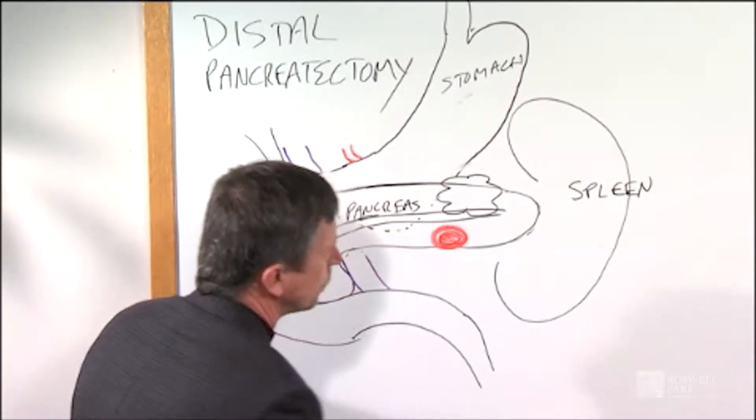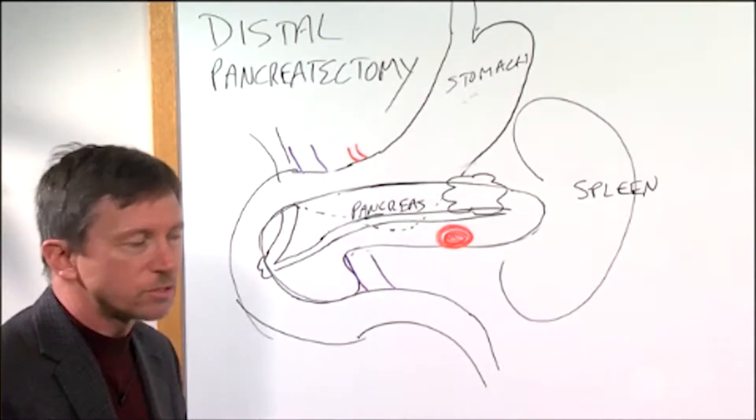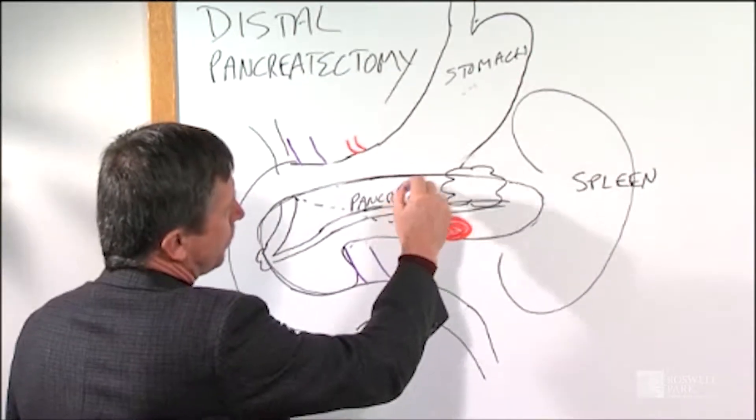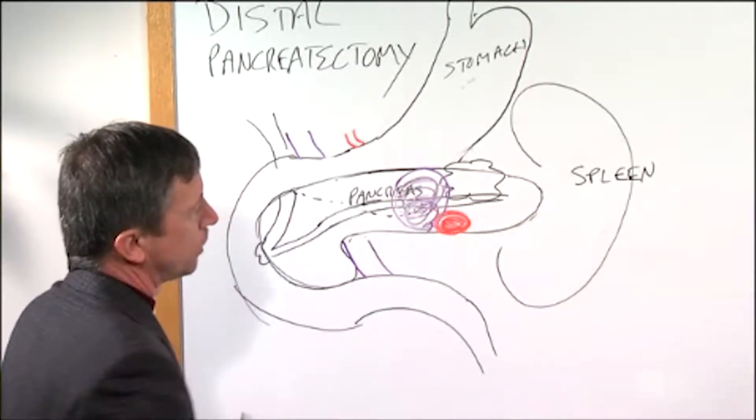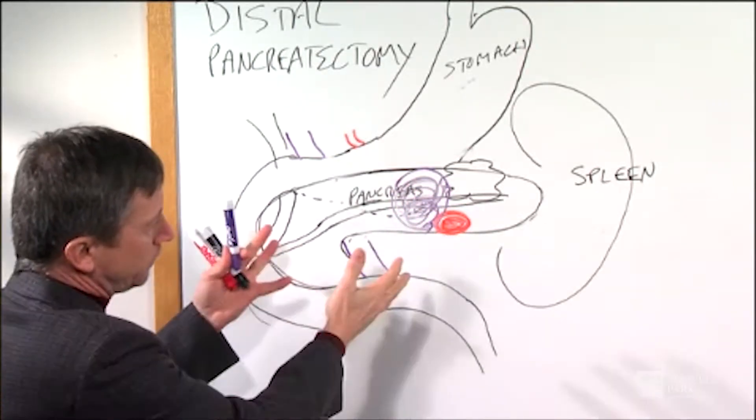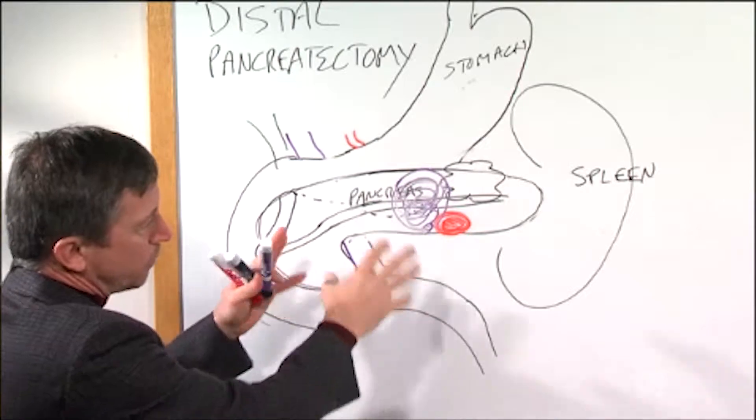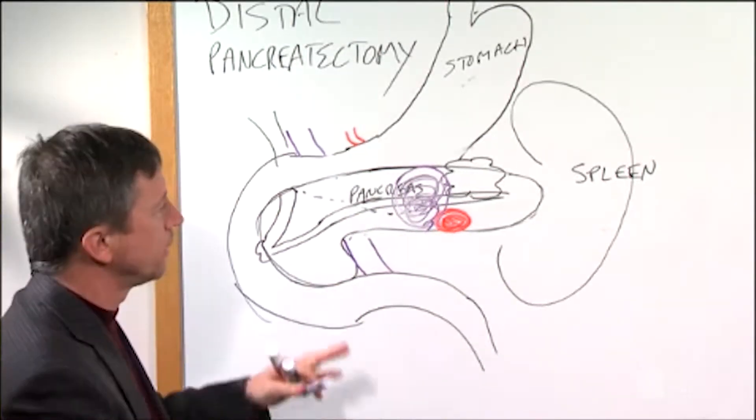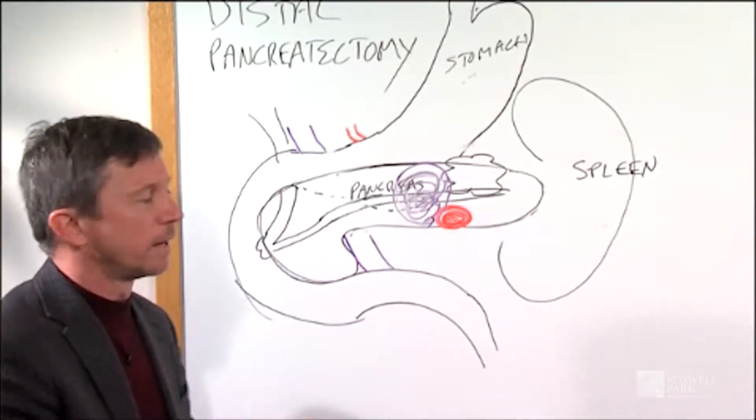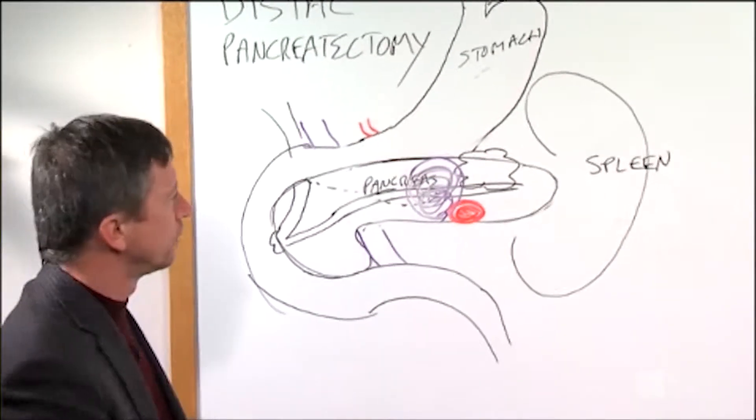A third common indication would be if you have an actual cancer of the pancreas. For example, there would be a mass here and a more solid appearing tumor. But all of the indications, the procedure is basically very similar, whichever the indication. But we'll talk specifically about your particular type of tumor and the follow-up for that.